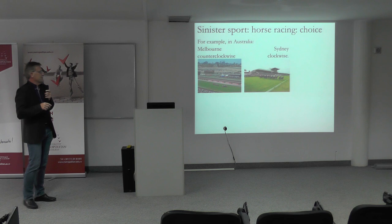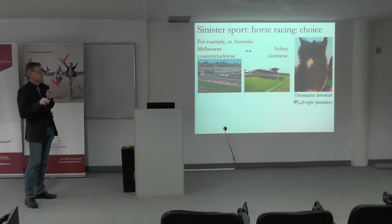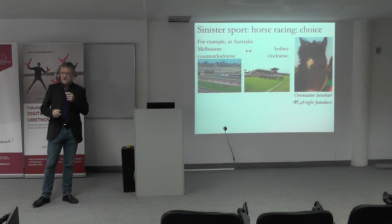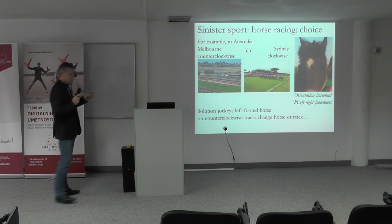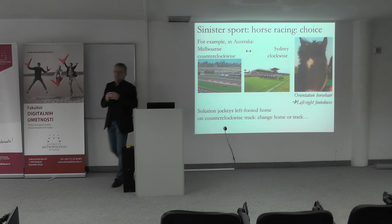In Australia, for horse racing, in Melbourne they do it counterclockwise and in Sydney they do it clockwise. Some people say you can see it on the horse — that the hair of the horse goes one way or another depending on whether it's right-footed or left-footed. So if you are a jockey, you can choose: if your horse is left-footed, you go to one track; if it's right-footed, you go to the other. In horse riding, there's no discrimination because the jockey can choose the track. But in athletics, of course, this is not true.